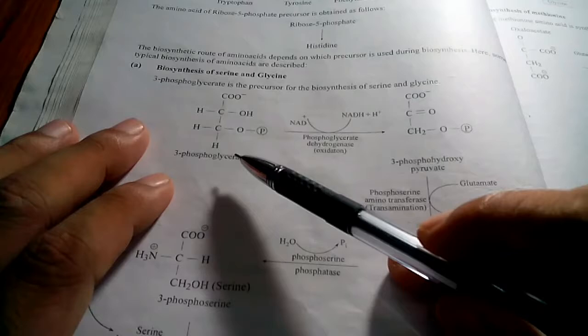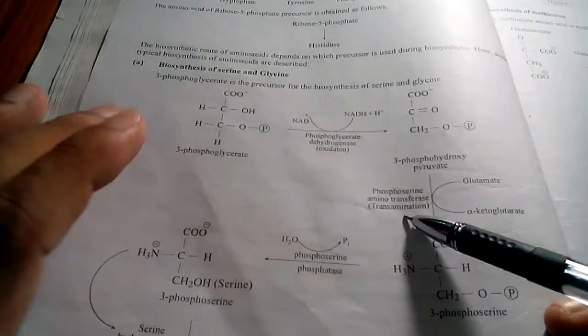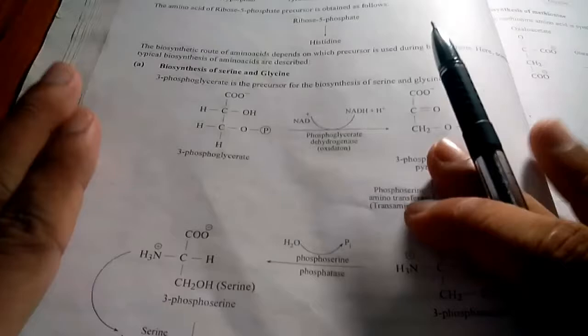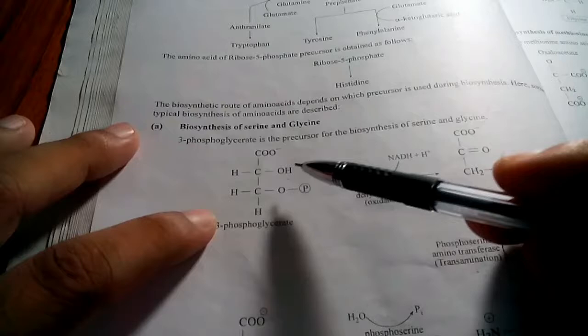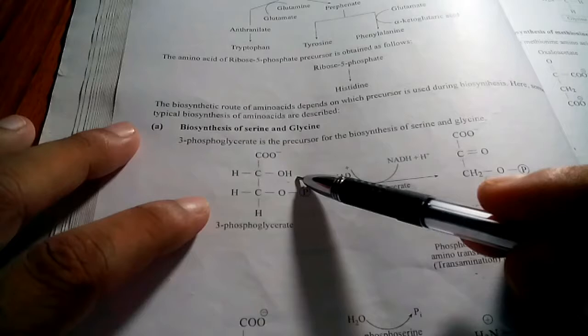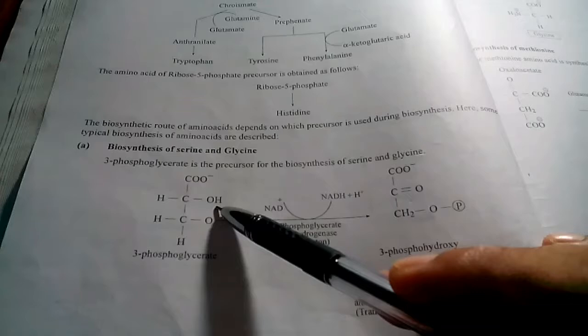The first step is oxidation. This is the structure of 3-phosphoglycerate, which contains a secondary alcohol. As you know, a secondary alcohol is oxidized to form a ketone. So here the secondary alcohol is converted into a ketone — all other atoms remain the same.